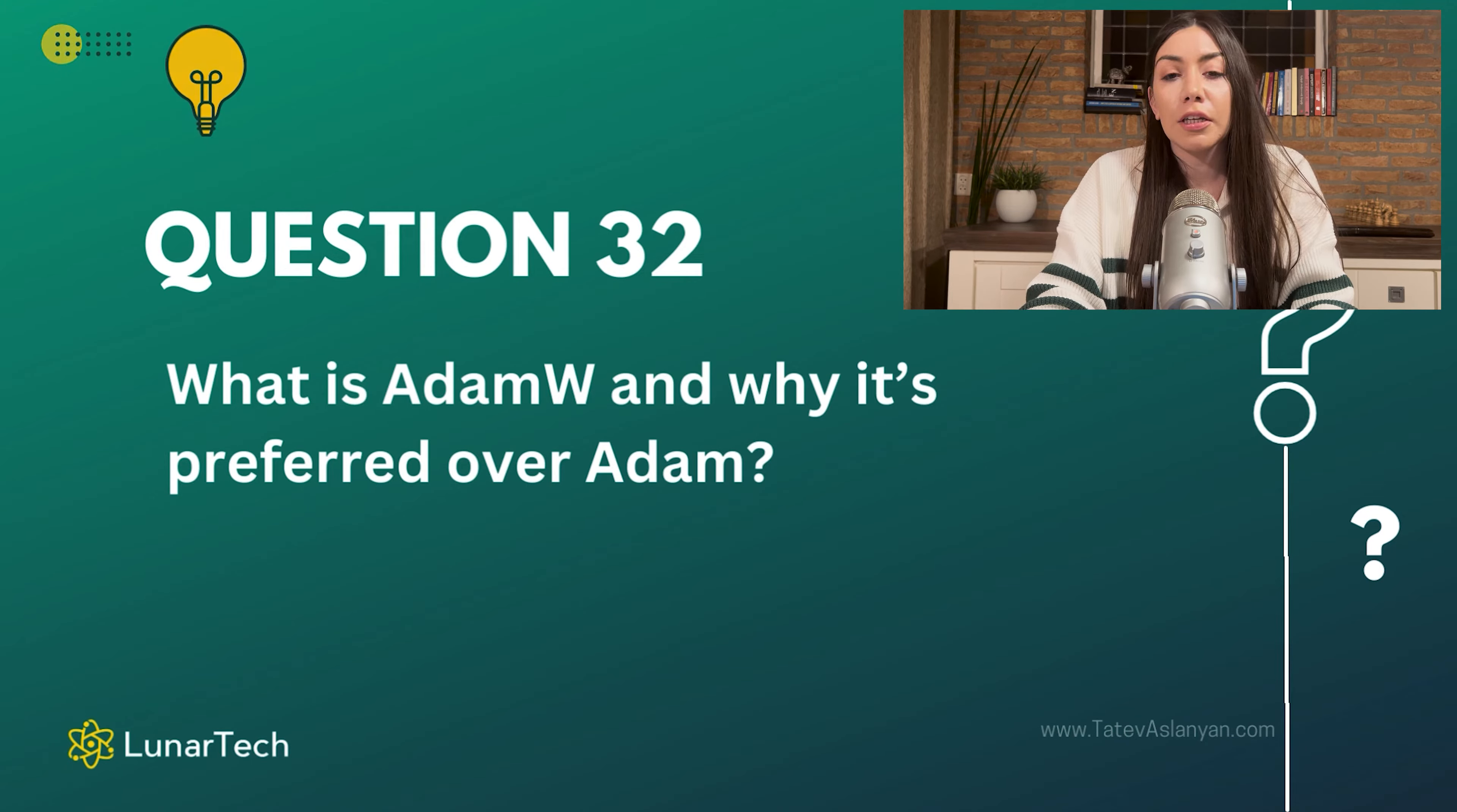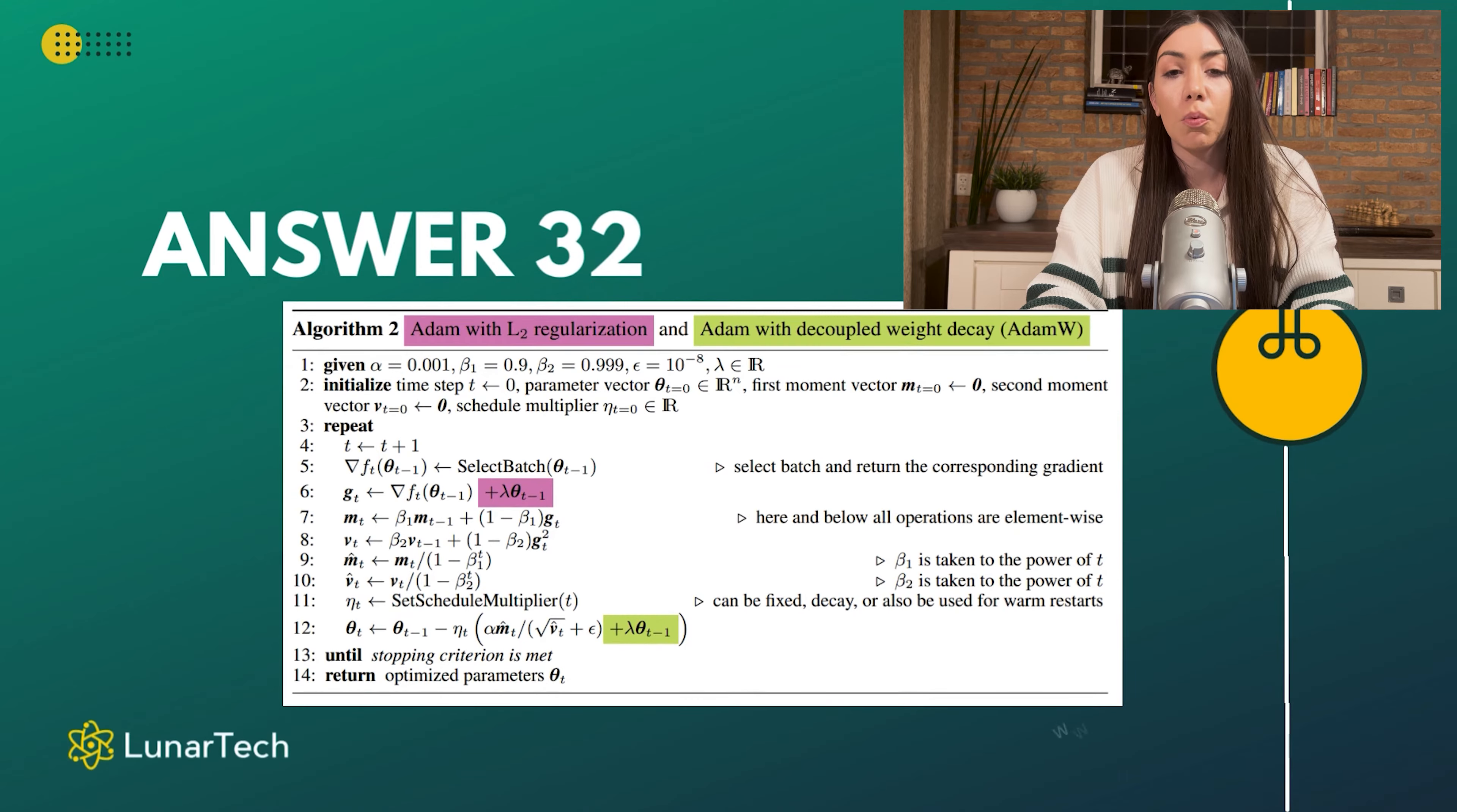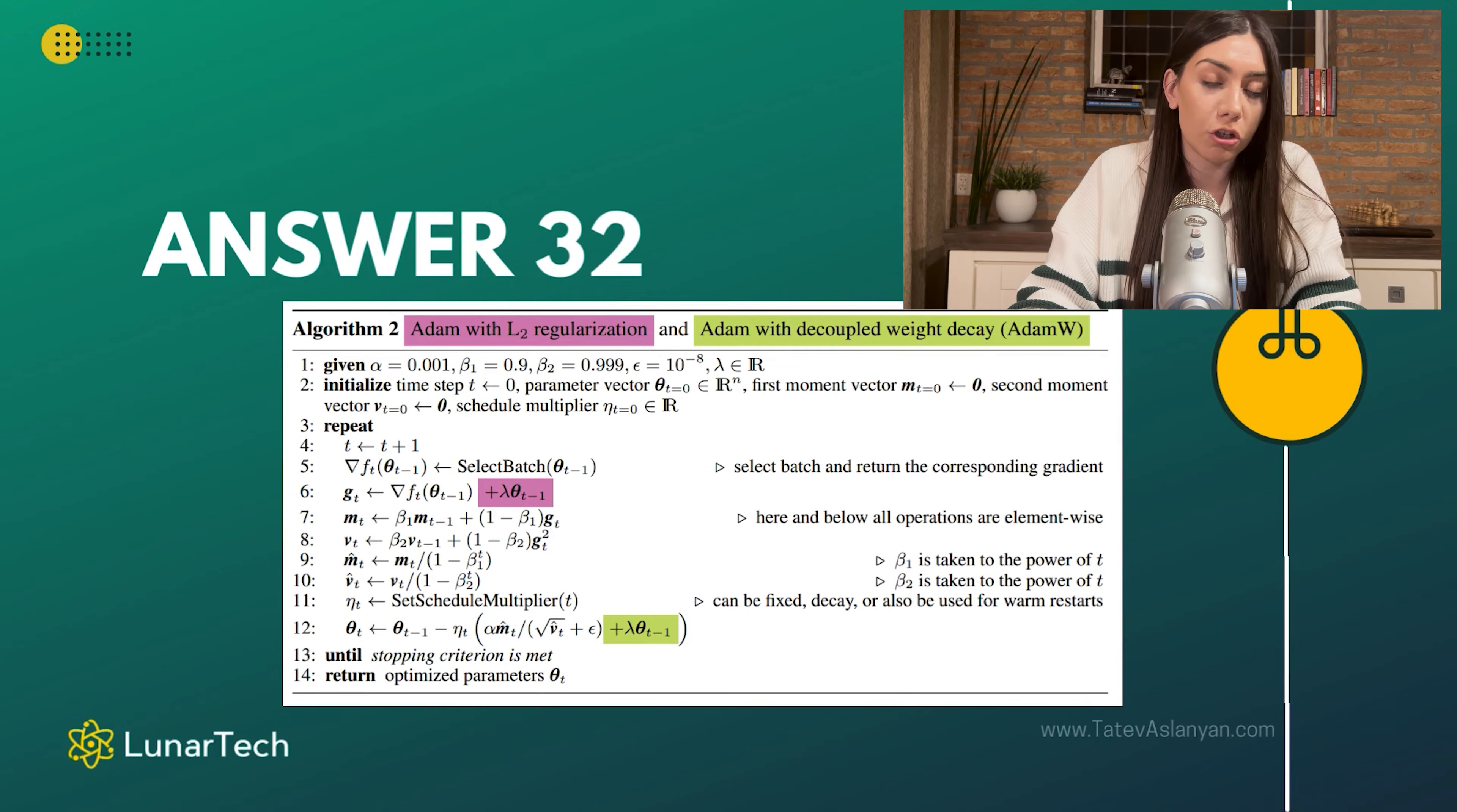The biggest difference between AdamW and Adam is the way they perform regularization. The traditional Adam has one specific disadvantage which usually comes when dealing with deep neural networks. Unlike the traditional SGD with momentum, Adam is unable to properly generalize the model.